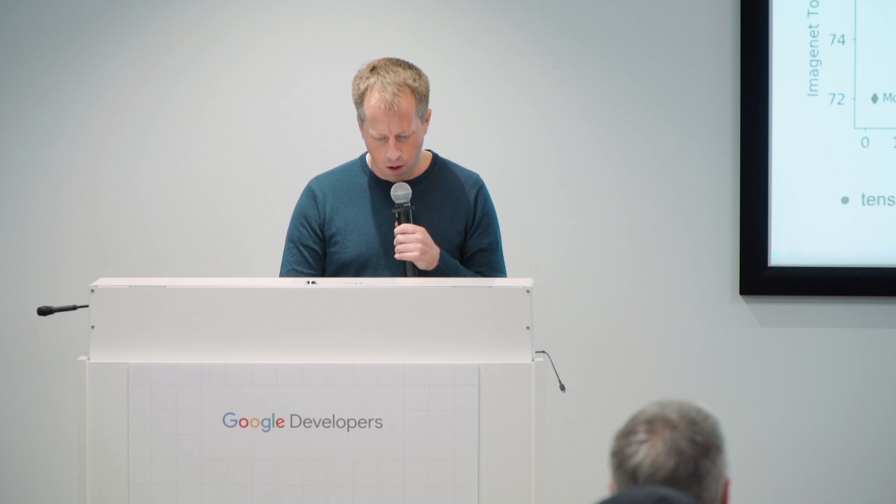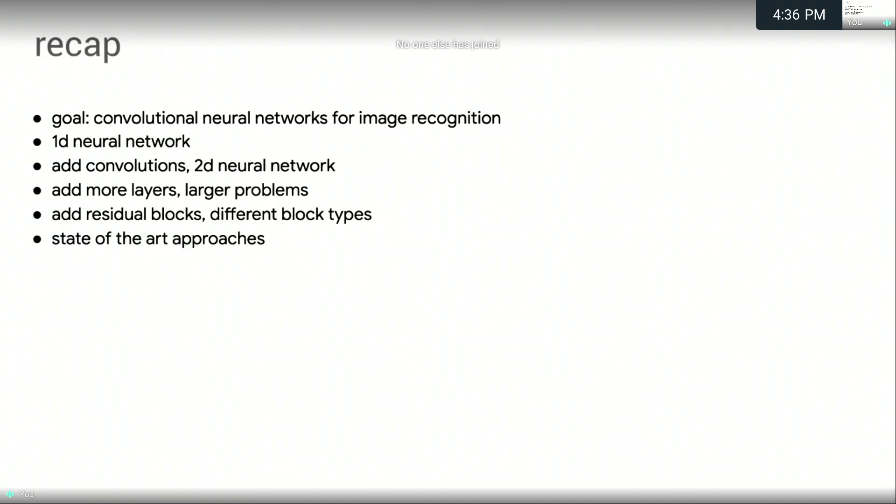Okay. To recap, our goal is to cover convolutional neural networks for image recognition. Towards that end, we built a one-dimensional neural network and applied it to a very simple dataset. From there, we added convolutions and built up a 2D neural network. From there, we added more and more layers to solve larger and larger problems. Then we added residual blocks and looked at how we can modify our block types in order to finally arrive at state-of-the-art approaches in this field.